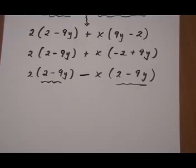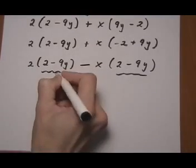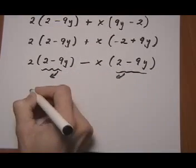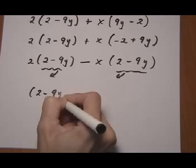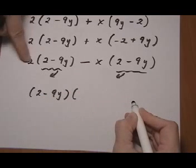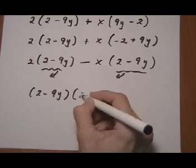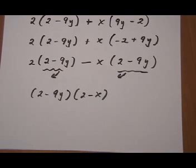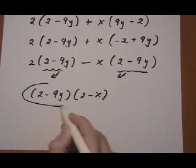That means I can pull it out as a common factor. Alright, so those are going to be pulled out to the front. 2 minus 9y. Parentheses, leftovers, 2 take away x. And then we have our complete factoring.